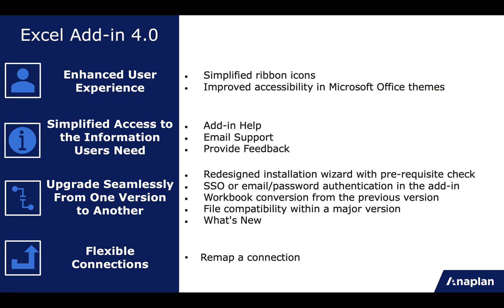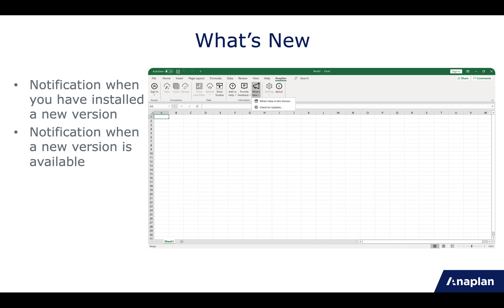Finally, to help you decide whether to upgrade, we've introduced the What's New functionality. In the ribbon, you'll see What's New with a red notification dot when you've just installed the add-in. Click on What's New and then 'What's new in this version' to launch a community page explaining all the benefits and new functionalities. When a new version such as 4.1 is available, a notification will also prompt you to check for updates, where you can review the new functionalities and decide whether to upgrade.